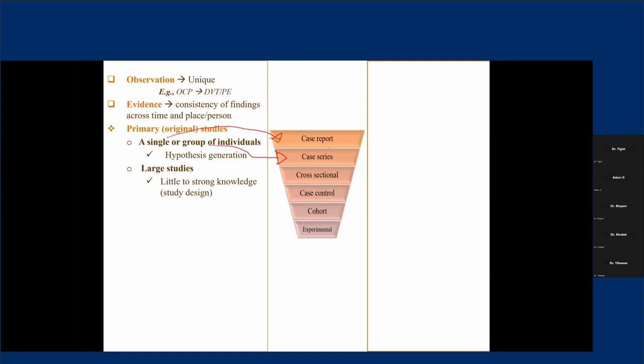A typical example is how HIV was first discovered — in five homosexual men who had no other risk factor to develop PCP, but they presented with PCP and were immune-suppressed. Further study explored why these otherwise healthy young homosexual men happened to have PCP, and with that, HIV was discovered. Case reports and case series are important to generate hypotheses — to question the presence of a relationship between one exposure and one outcome.